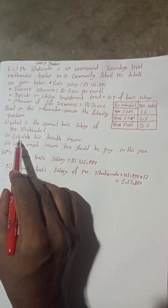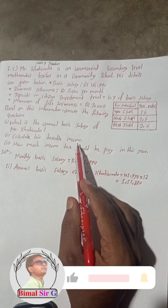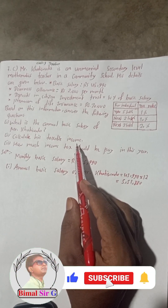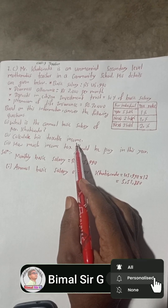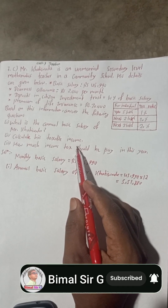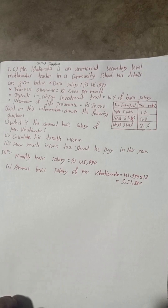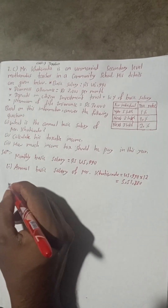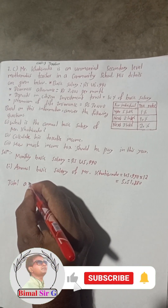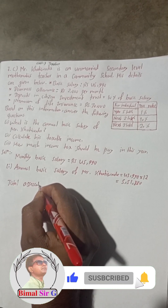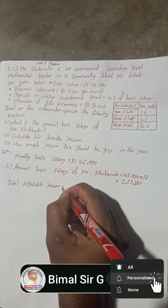For question number two, to find taxable income we first need to find total accessible income and then the tax rebate amount. So let's find the total accessible income.